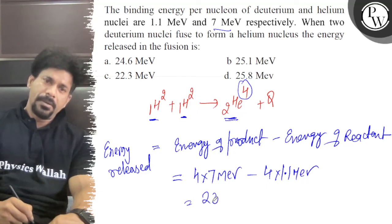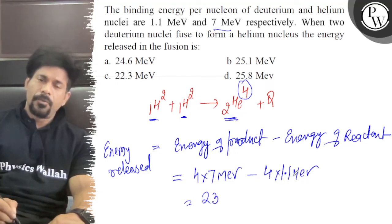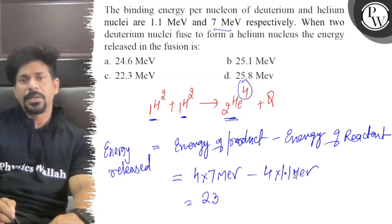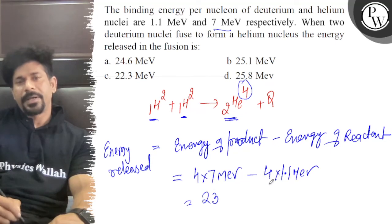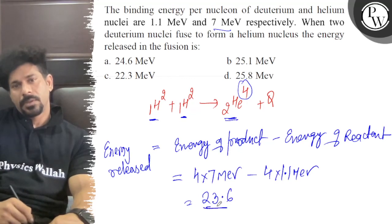If we solve this, it will become 23... that is 4.4. That is means 28 minus 4.4. So that must be 23.6 MeV.